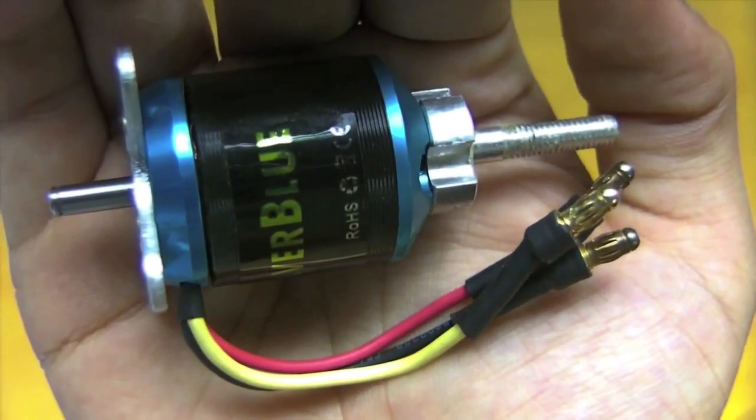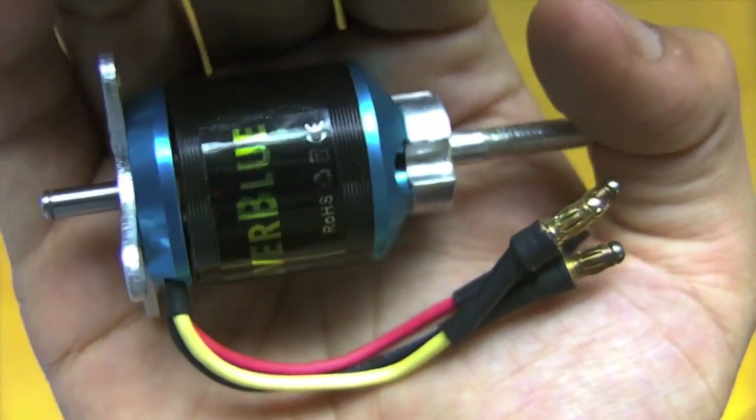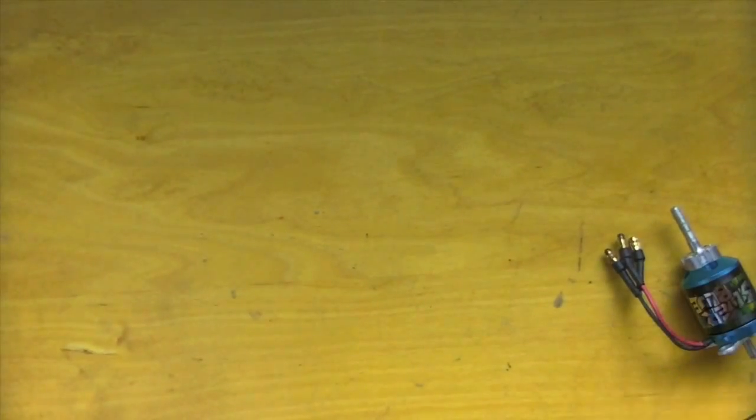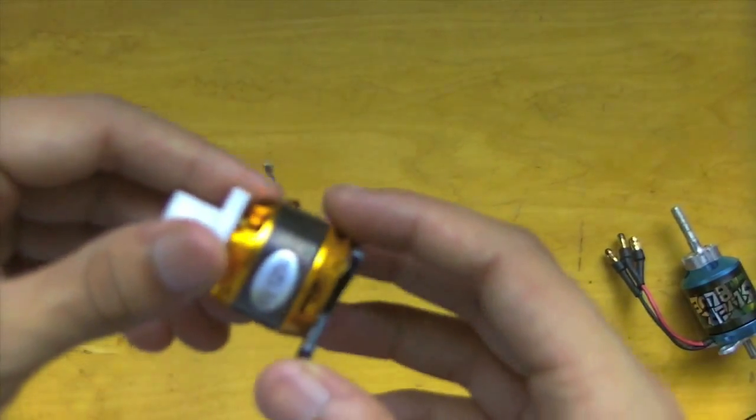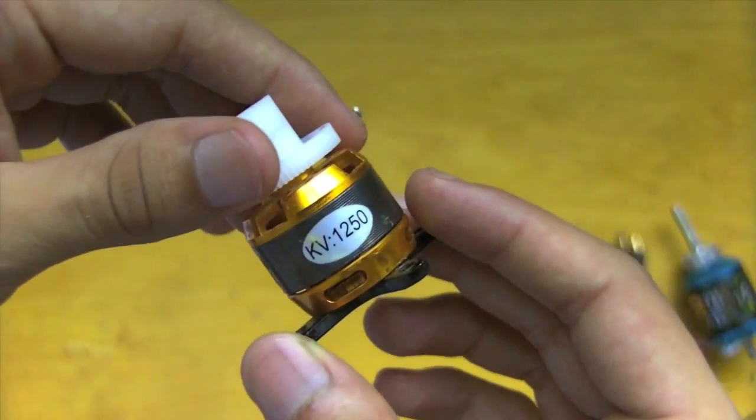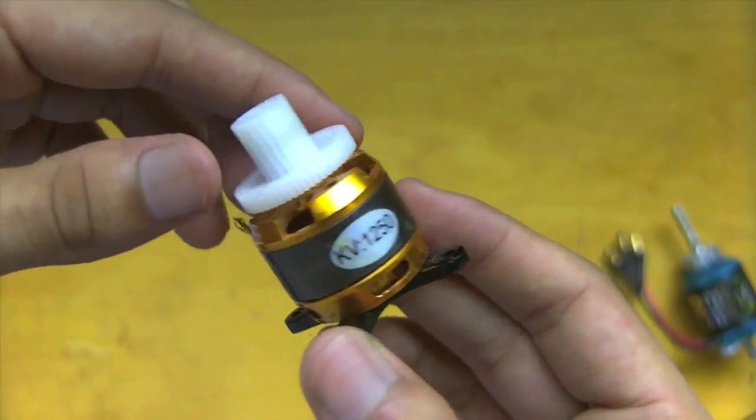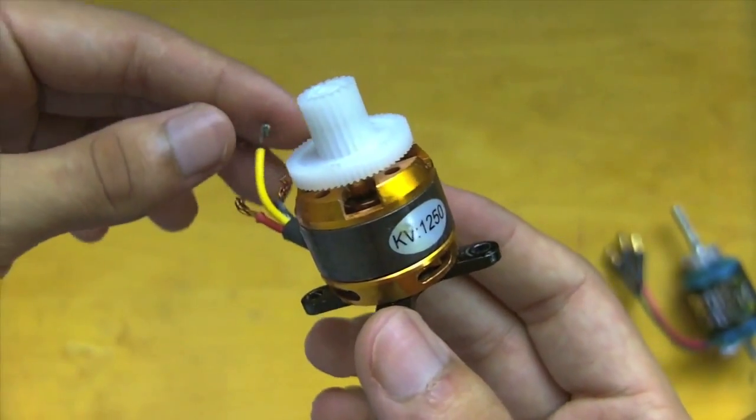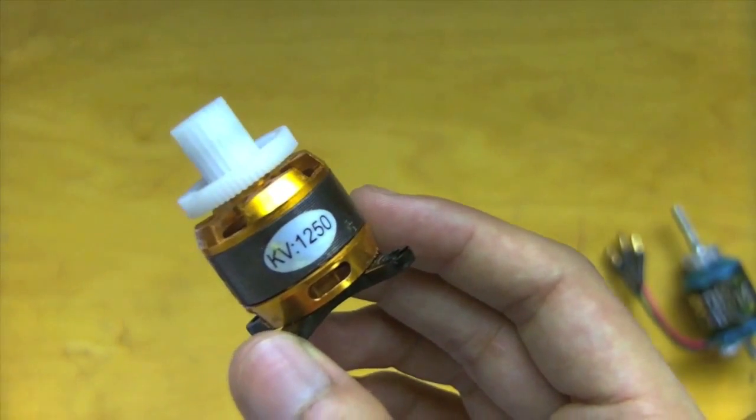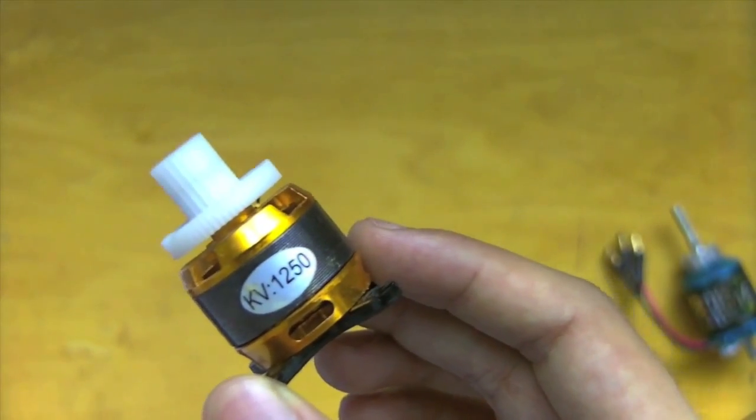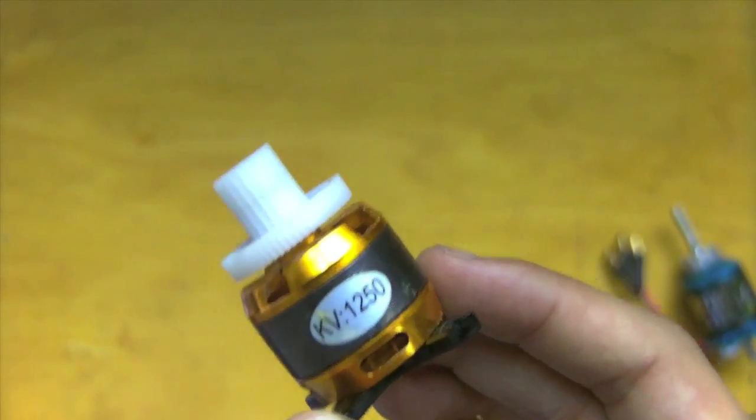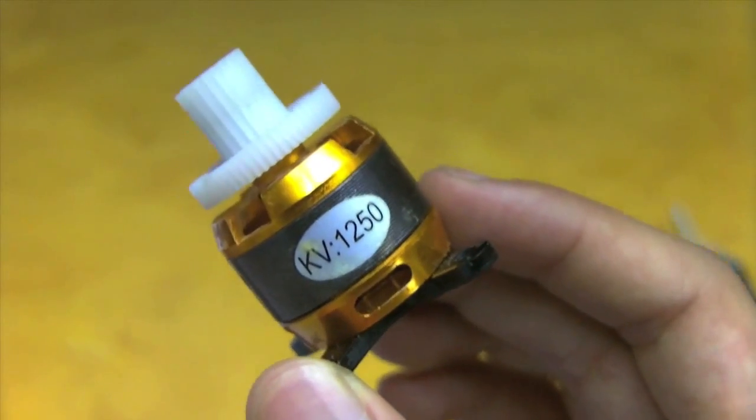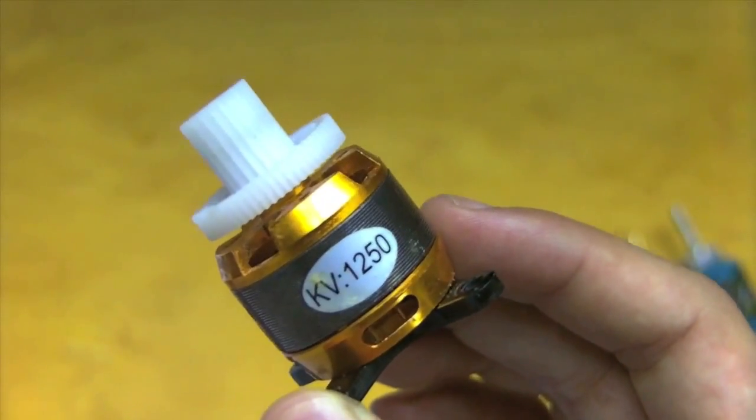These motors also have a rating known as the KV rating. It's a misleading name. KV makes you think of kilovolts. However, the K stands for constant. This constant, when multiplied by the number of volts, would give you the number of RPMs your motor is running at. So in this case, the motor is rated at 1,250 RPMs per volt. So if you ran this at 6 volts, you'd get 7,500 RPM.